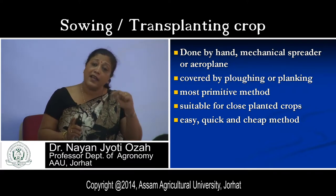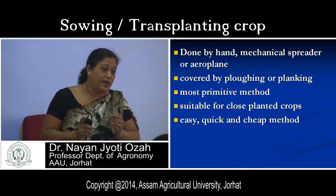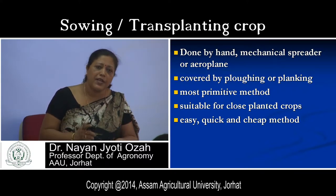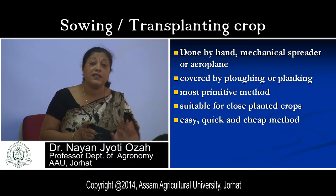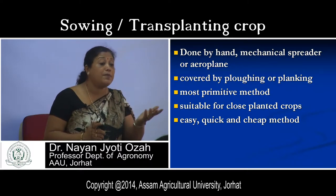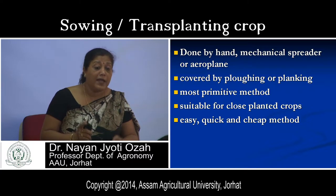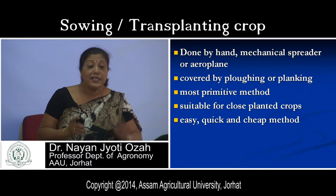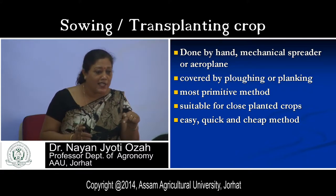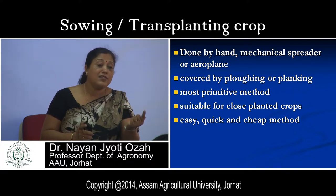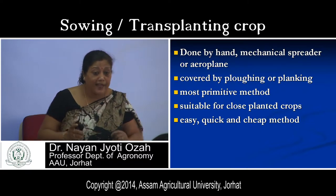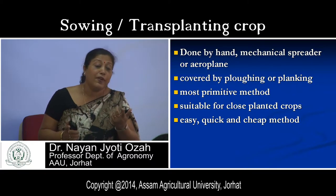However, broadcasting has many disadvantages. More seeds are required because seeds fall here and there — some go deep inside the soil and some remain on the soil surface without proper contact between seed and soil. Those that go too deep will not come up. As a result, germination is not uniform and growth is not uniform. At the same time in the same land, some plants may be at seedling stage while others may be at flowering or maturity stage, because of non-uniform germination.